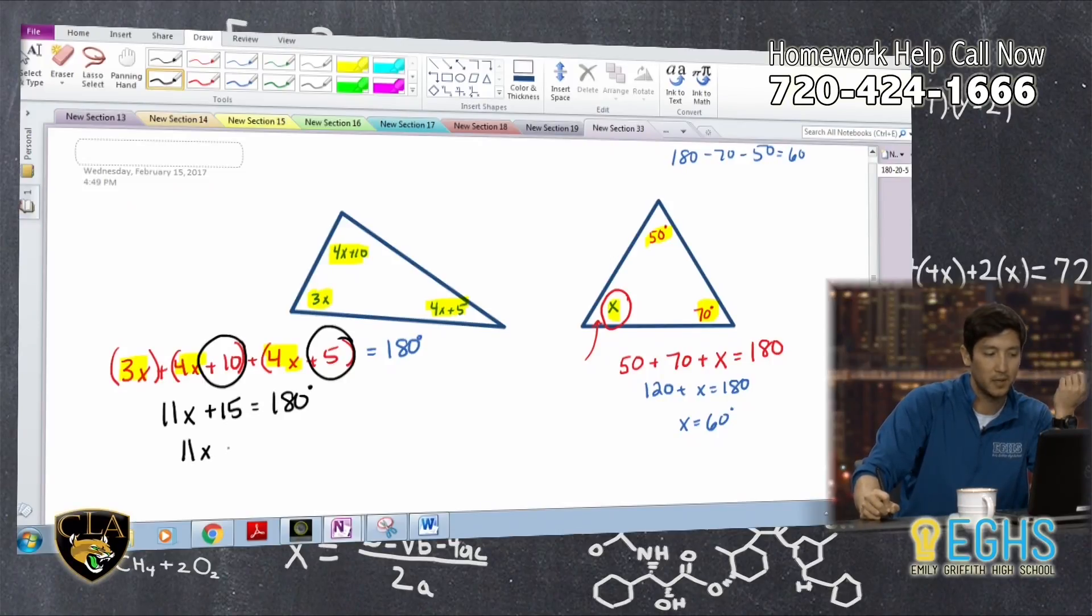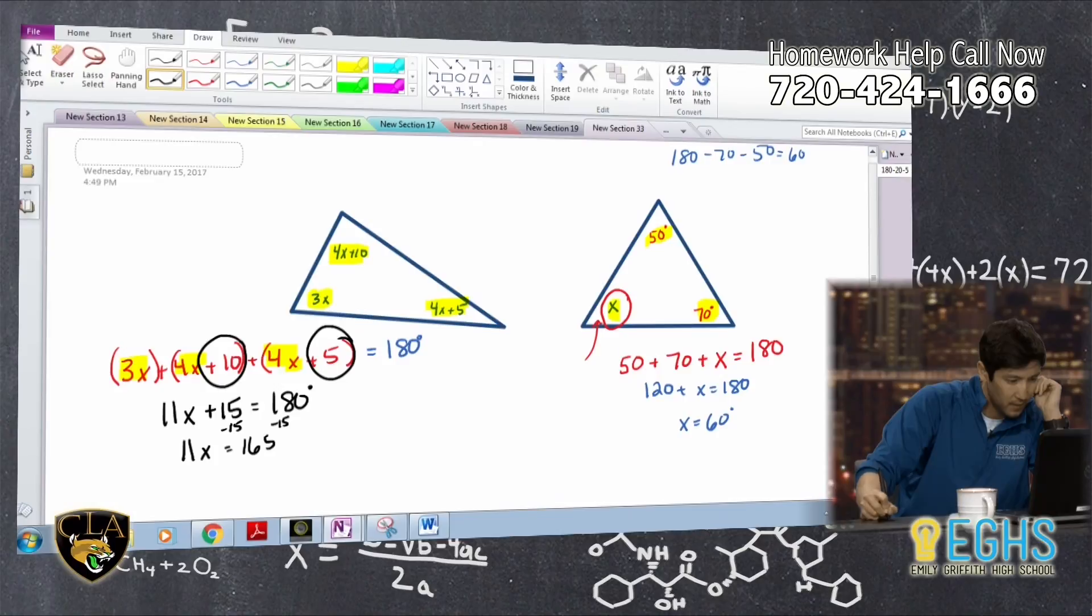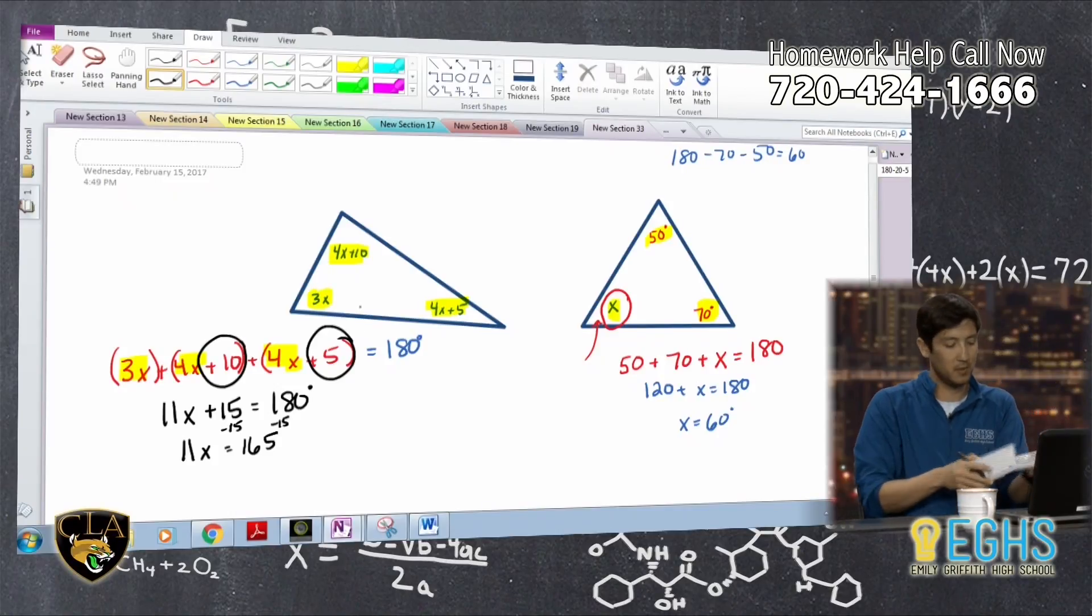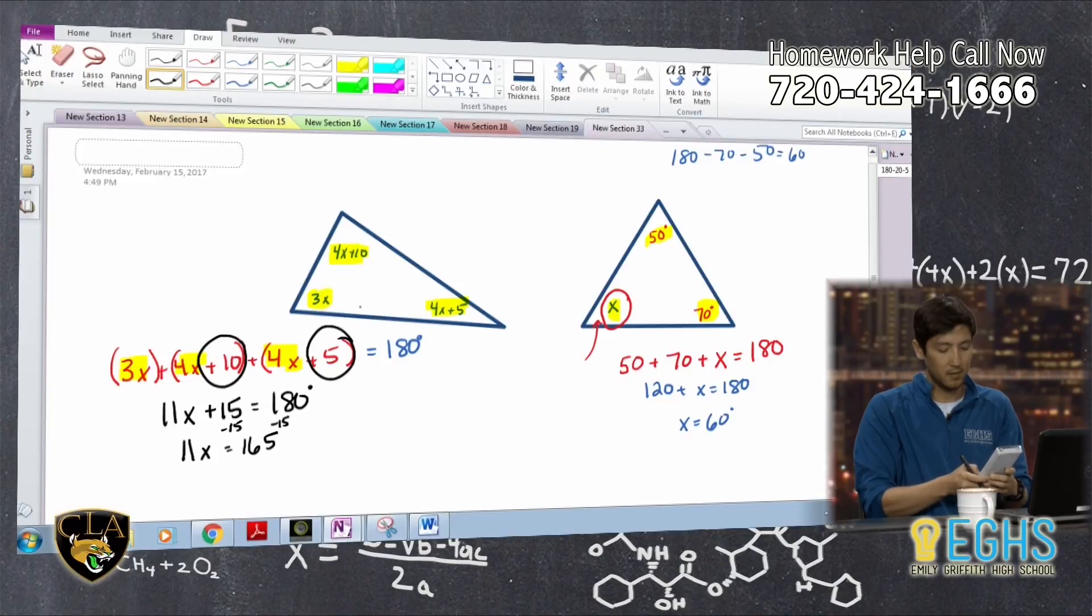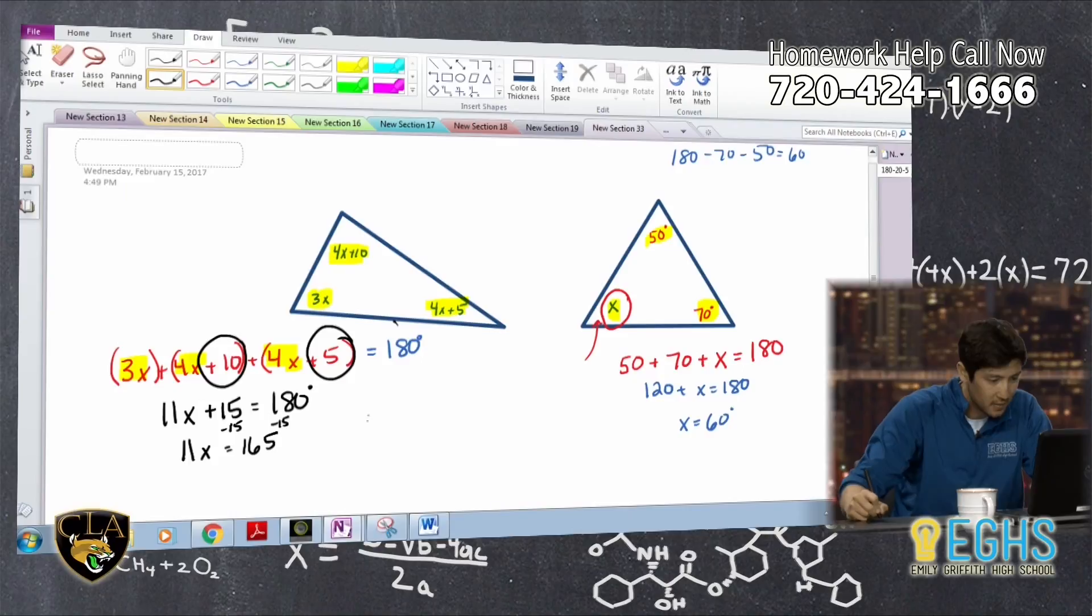And then again, you just have an algebraic expression. So I'm subtracting 15, subtracting 15, equals 165. 165 divided by 11? 15. So that is the value of X.